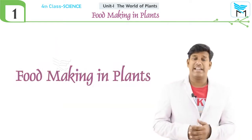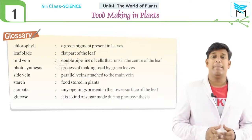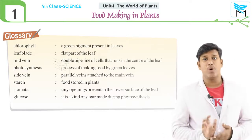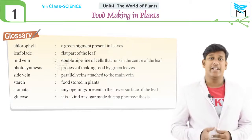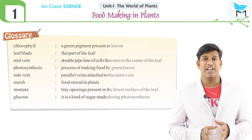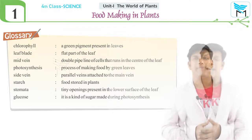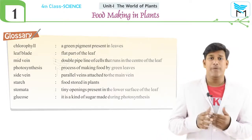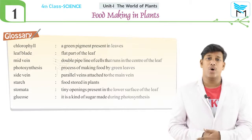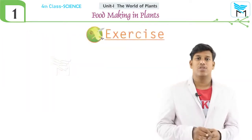Okay students, this is all about today's topic — food making in plants. Let us discuss the glossary for a quick review. Chlorophyll: the green pigment present inside the leaf. Leaf blade: the flat portion of the leaf. Midrib: the central portion of the leaf which divides it into two parts. Photosynthesis: the process of preparing food by plants. Starch: the food stored in plants.